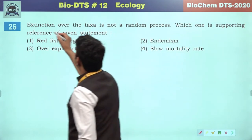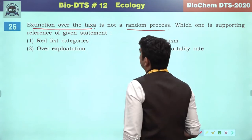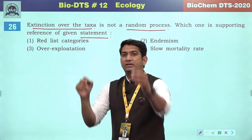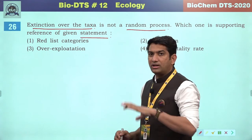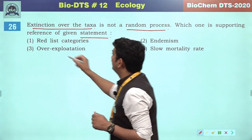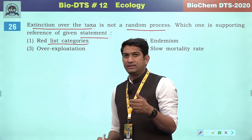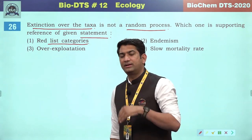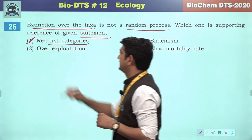Extinction over taxa is not a random process — which one supports this statement? Mortality is random but extinction is not random. If we go for the red list categories, there are critically endangered species, then endangered, then vulnerable to extinction, then data deficient. So we can go for the red list categories.